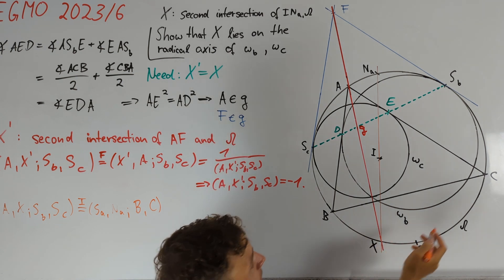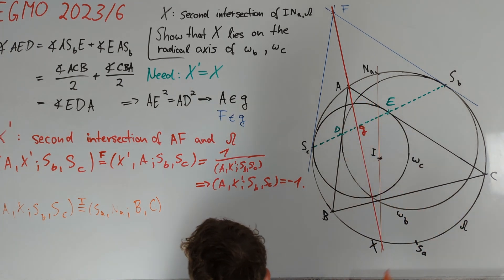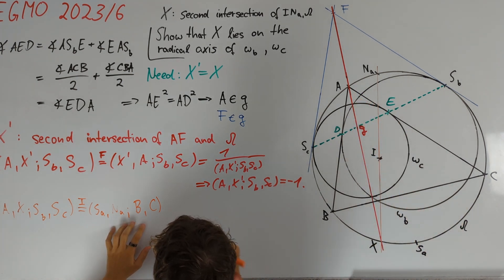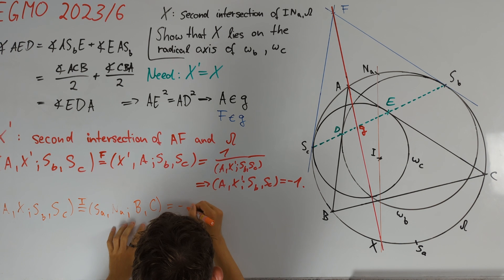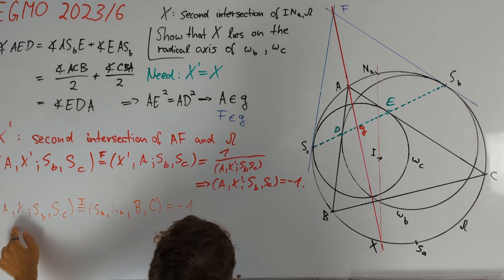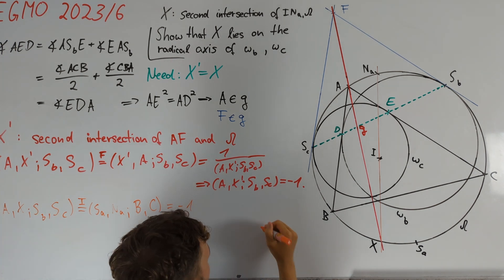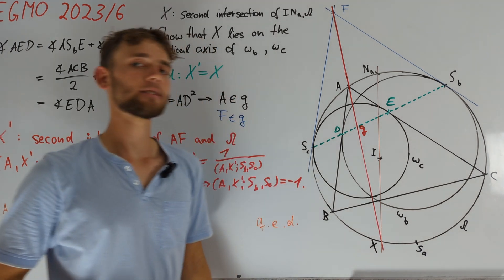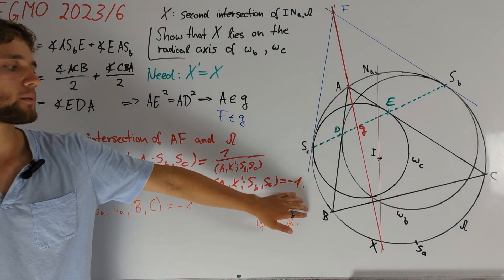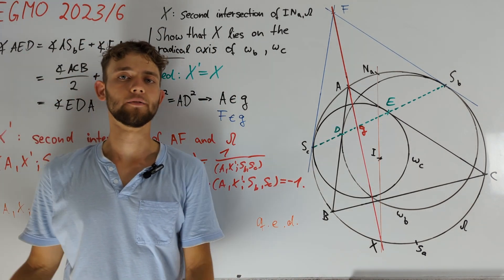Notice that the quadrilateral B, SA, C, NA is a kite and therefore these points are harmonic and we indeed obtain that these cross ratios are equal and therefore we are done. As an exercise, I challenge you to solve this problem using square root DCS version.